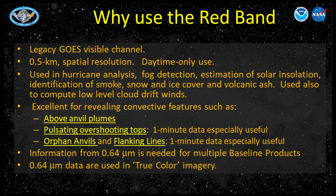Besides being used as a standalone band for major critical decision making such as during hurricanes and fog detection, it is very useful in mesoscale sectors with one-minute imagery for rapidly changing phenomena, especially convection and fires. The red band in combination with a green band simulated from the veggie band at 0.86 micrometers and the blue band at 0.47 micrometers provides approximate natural true-color imagery of the Earth as well.